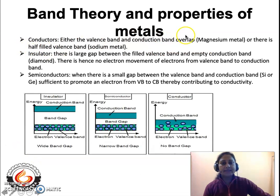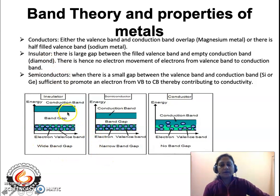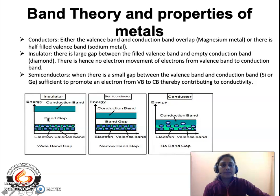Now we extend the band theory to explain the properties of metals. Materials can be classified into three types: conductors, insulators, and semiconductors. Looking at this diagram, we see there are two types of bands in any material — the valence band where electrons are placed, and the conduction band which is empty. In between the valence band and the conduction band, there is a band gap, and the characteristic of the band gap determines the properties of the material.